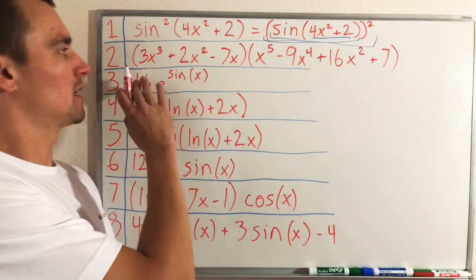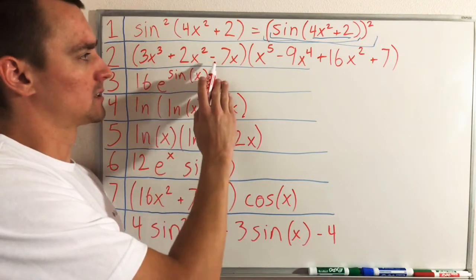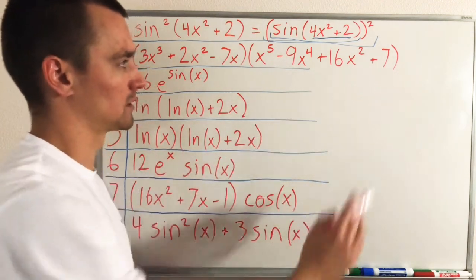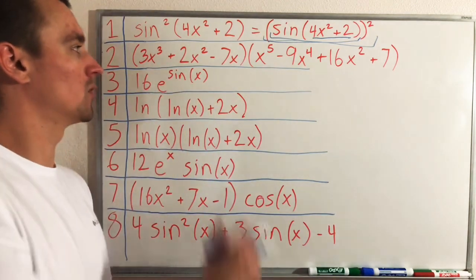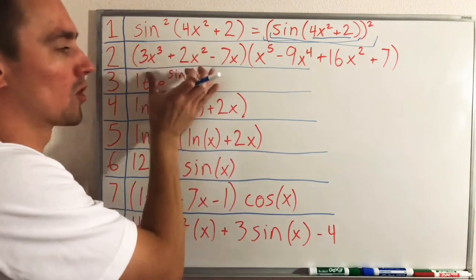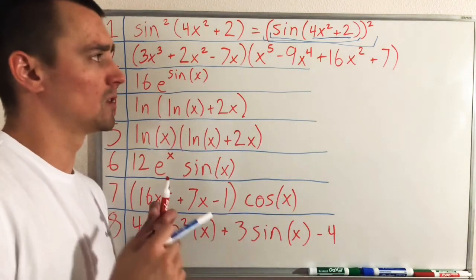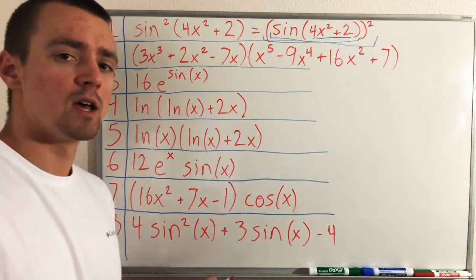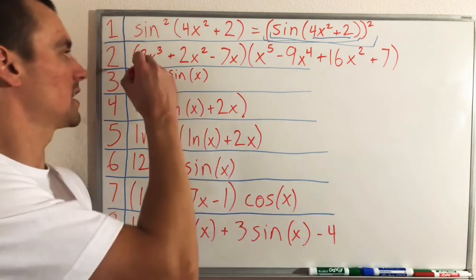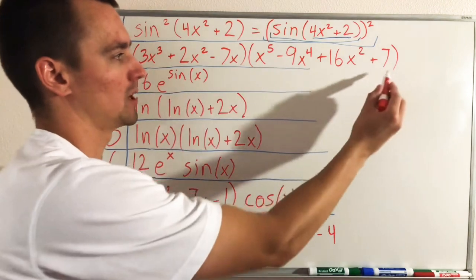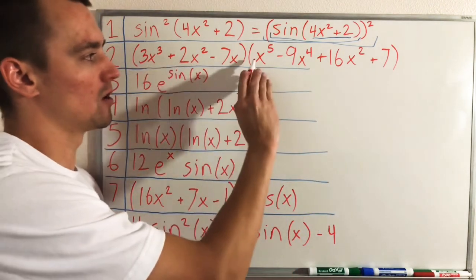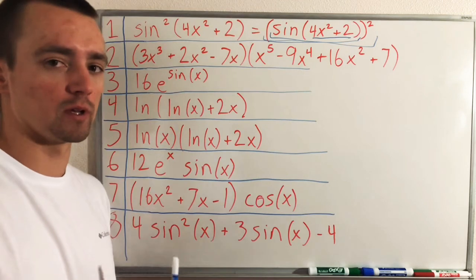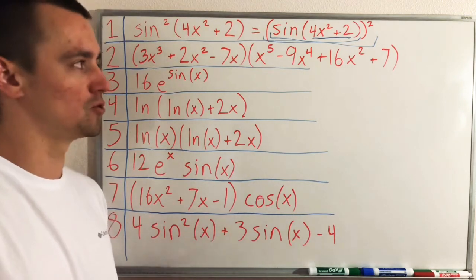On to example two: (3x³ + 2x² - 7x) multiplied by (x⁵ - 9x⁴ + 16x² + 7). Here you can see pretty clearly we have two more complex functions in parentheses being multiplied together. Having two entire functions being multiplied is exactly the case where you want to use the product rule. We don't really have a composite function here — it's more simply described as the product of these two complex functions, so we apply the product rule.